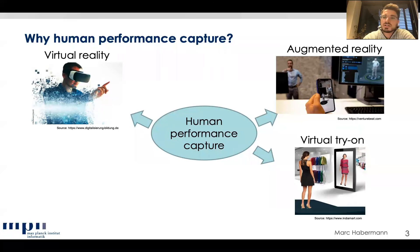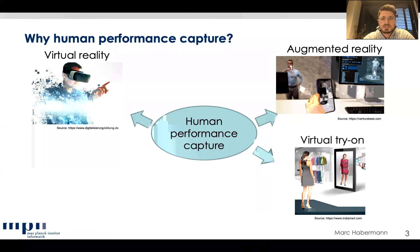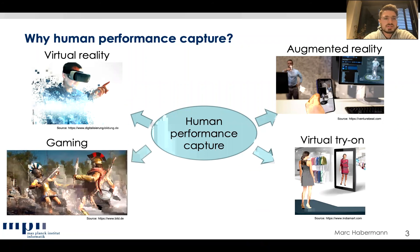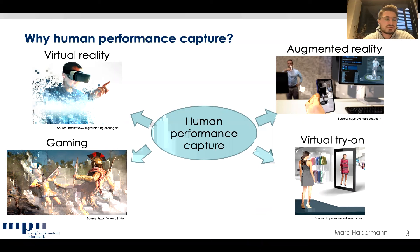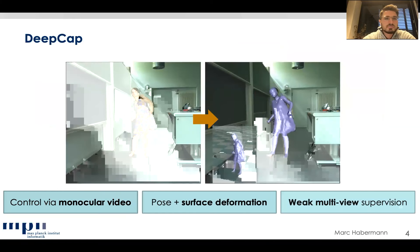Another application could be virtual try-on, where you stand in front of a virtual screen and see your virtual double in a mirror, allowing you to change apparel, pose, and appearance. Yet another application is a gaming scenario where you film yourself and directly drive your CG character — not via a mousepad, but by simply moving. What all these applications have in common is the need for a real-time capable capturing method, and ideally with just a single color camera.